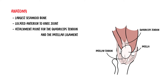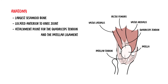The quadriceps consists of four individual muscles: the rectus femoris, vastus lateralis, vastus medialis, and vastus intermedius. The quadriceps muscles have different origins, but converge and insert onto the patella as the common quadriceps tendon.